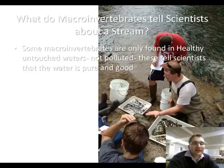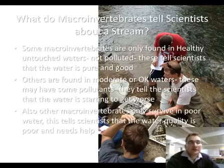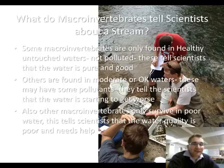If we find macroinvertebrates that are found only in healthy bodies of water, that tells us the water is a clean stream. Some other macroinvertebrates are found in moderately clean bodies of water, and so that tells scientists that the water is either starting to get worse or in the process of getting better. Other macroinvertebrates only survive in very poor water quality, so that tells us the water quality in that environment is not very good.